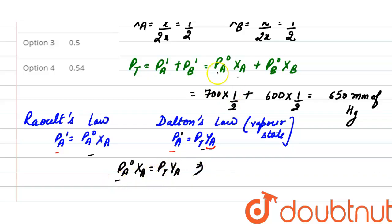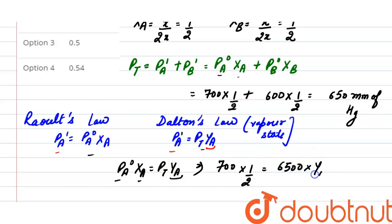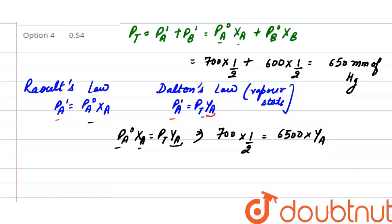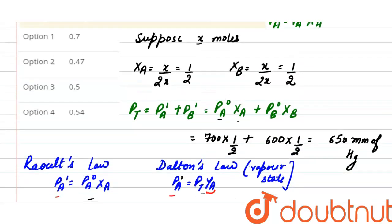So: vapor pressure of benzene in pure state (700) × mole fraction in liquid (1/2) = total pressure (650) × mole fraction in vapor state. Solving, mole fraction of benzene in vapor state = 700 × (1/2) / 650 = 0.538, approximately 0.54. The correct option is option 4.